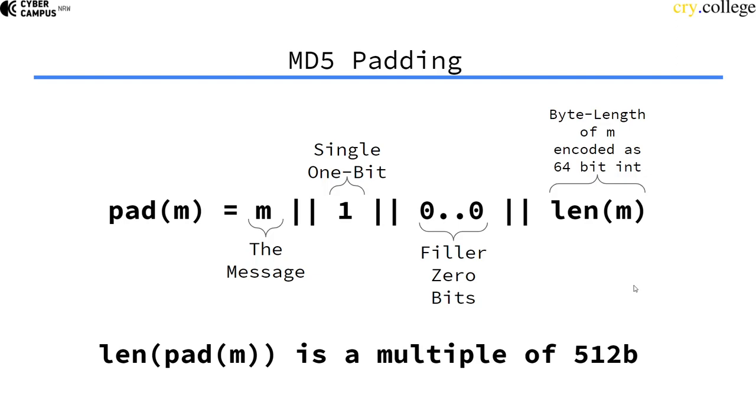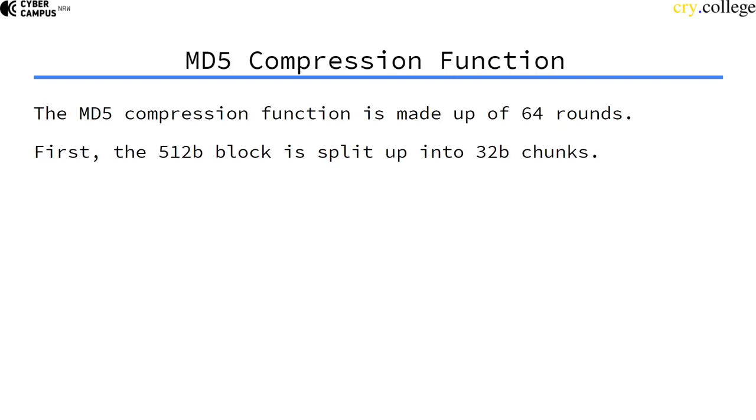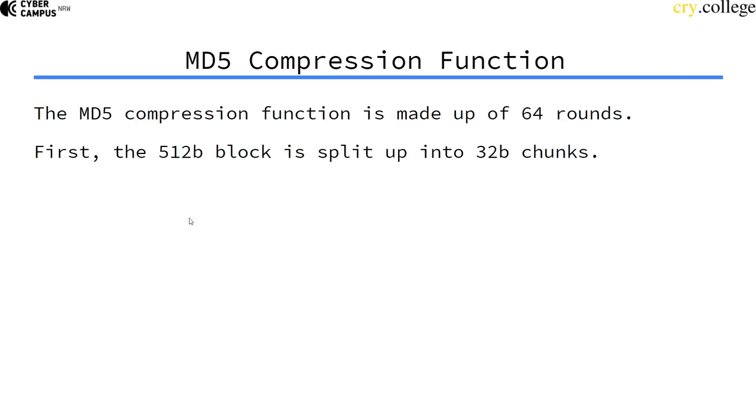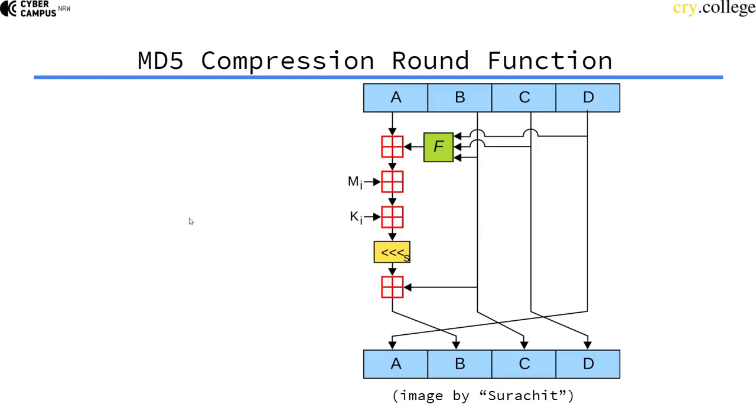The MD5 compression function is made up of 64 rounds. First, the 512-bit input block that comes in here is split up into 32-bit chunks. So the compression function, as I said, is split up into 64 rounds and each round looks like this.